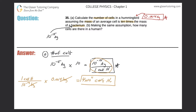Now for part B. It says, making the same assumption, how many cells are there in a human? Making the same assumption that the average mass of a cell in a human is 10 times the mass of a bacterium, for part B I can write that 10 raised to the negative 14 kilograms is equivalent to one cell in a human. I also need to know the average mass of a human, so let's assume that's 75 kilograms.